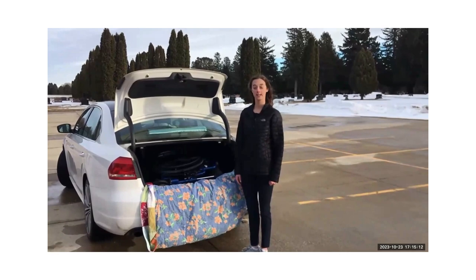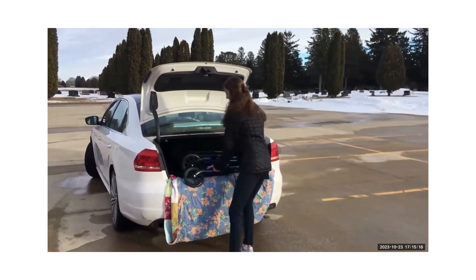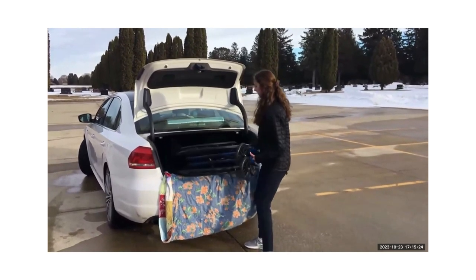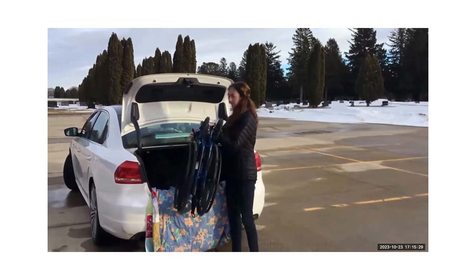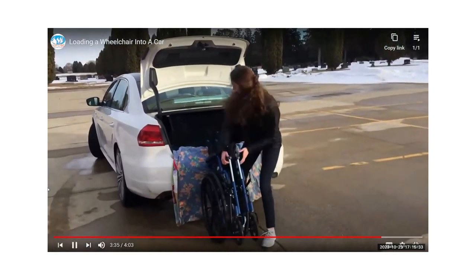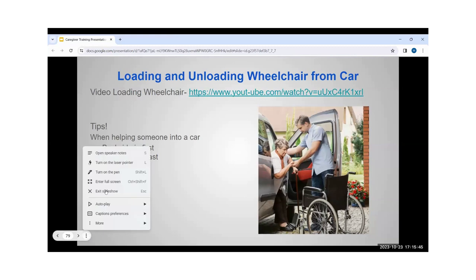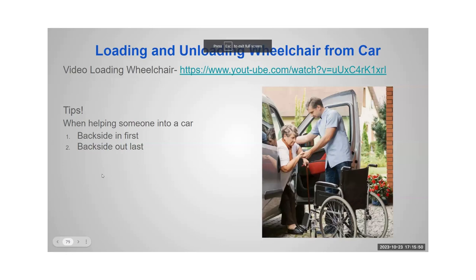Unloading from the trunk is the reverse — grab near the wheels, shimmy it out, twist it over, tilt it back up, and ease it down. It's all about practice. When helping someone in and out of the car, remember it's different from how you get in. Their backside goes in first — they sit down, then bring their legs in. To get out, legs come out first, then their backside.